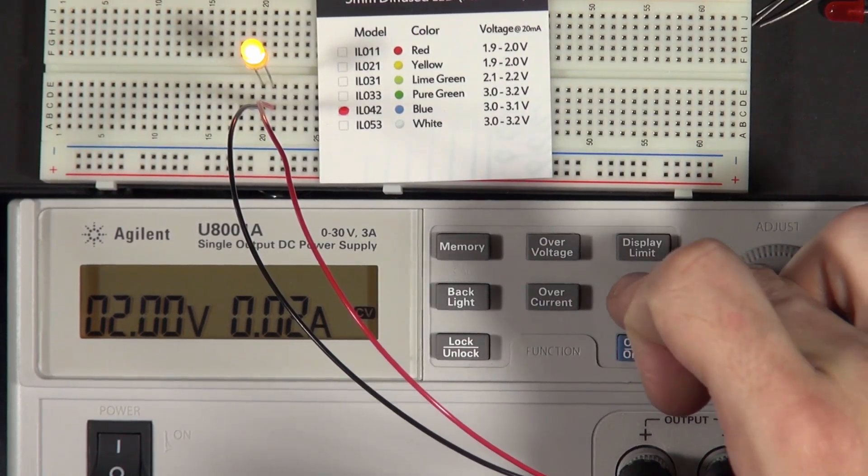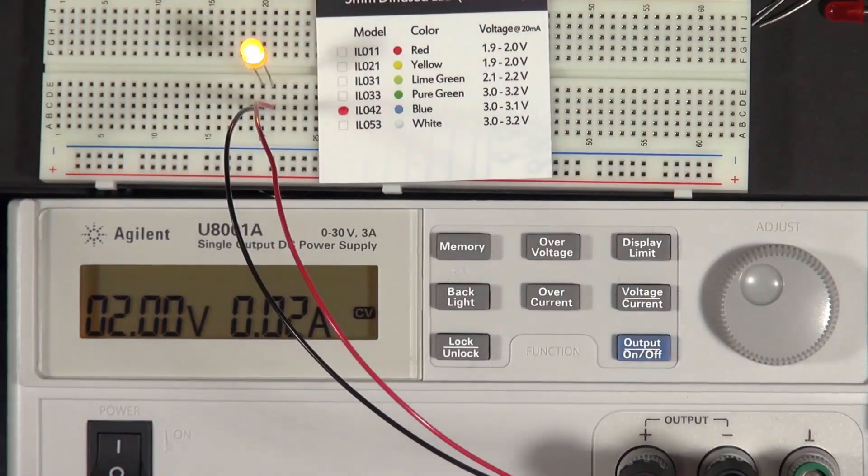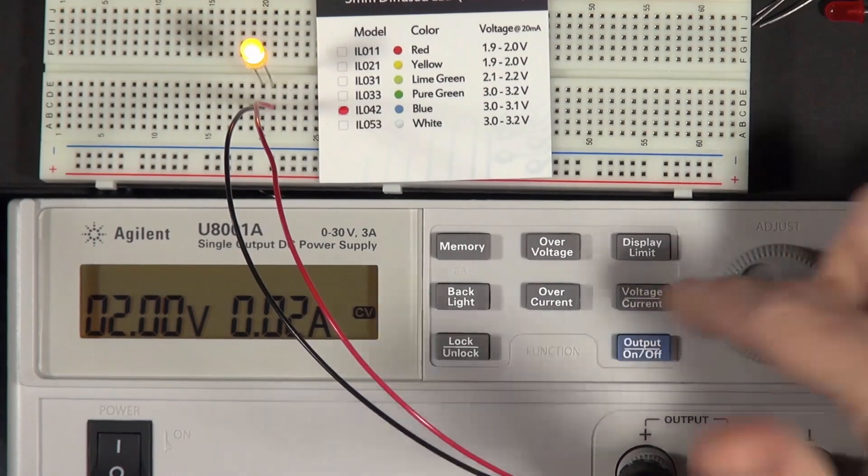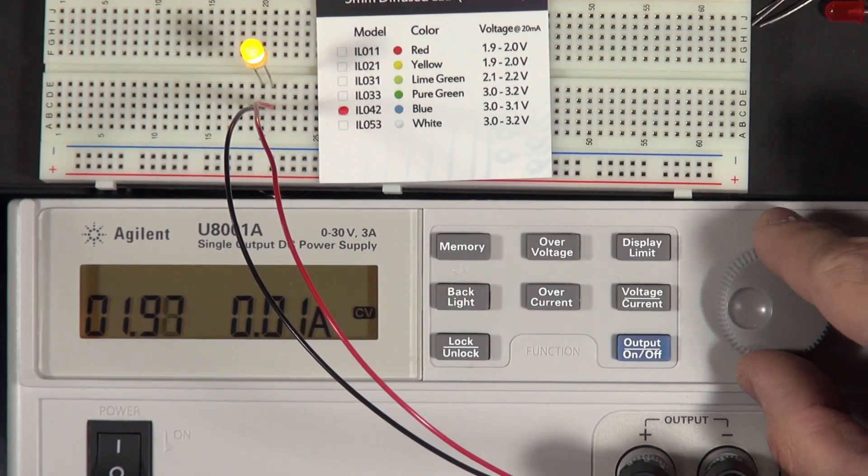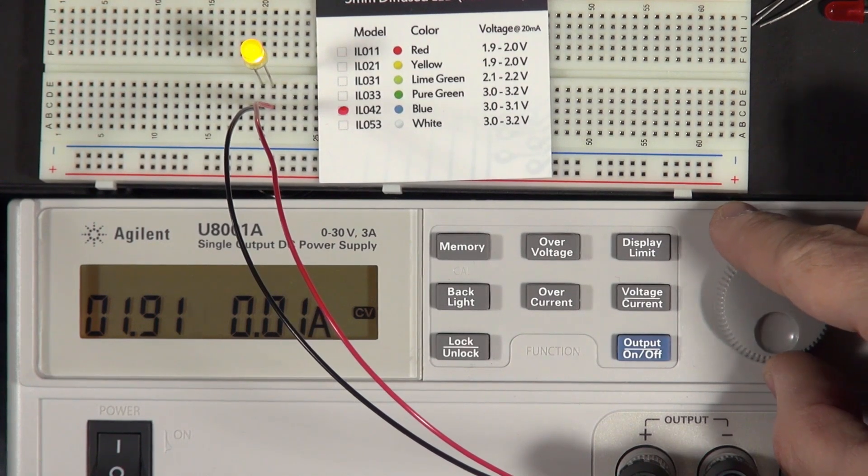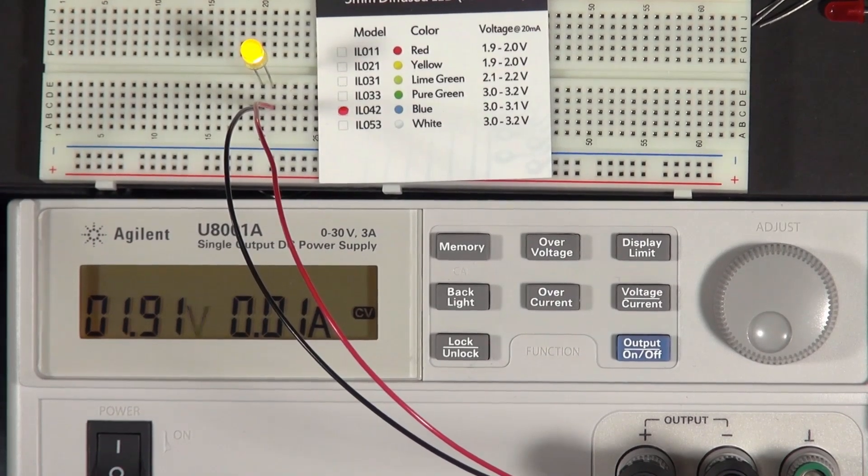But what I want to show you is that the brightness of the LED, and actually the function of the LED, is very dependent on voltage. And you may have noticed that just as I was increasing the voltage there. But just a little bit of voltage, a hundredth of a volt here, is actually making a noticeable difference. And maybe you can't see it, but let me see if I can turn the lights off in here. I'll turn the lights down a little bit.